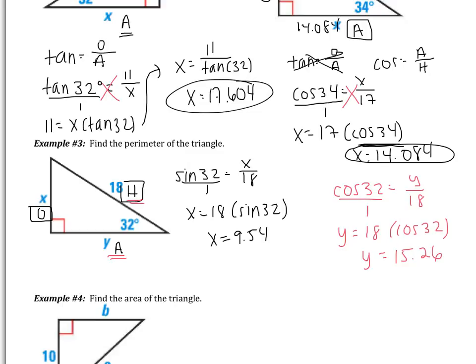So y in this case is 15.26. Now the final question asks you for the perimeter. Perimeter just means add up the sides. So it's going to be 9.54, my x. Add 18, the hypotenuse. Add y, which is 15.26. So my perimeter in this case ends up being 42.8 units.